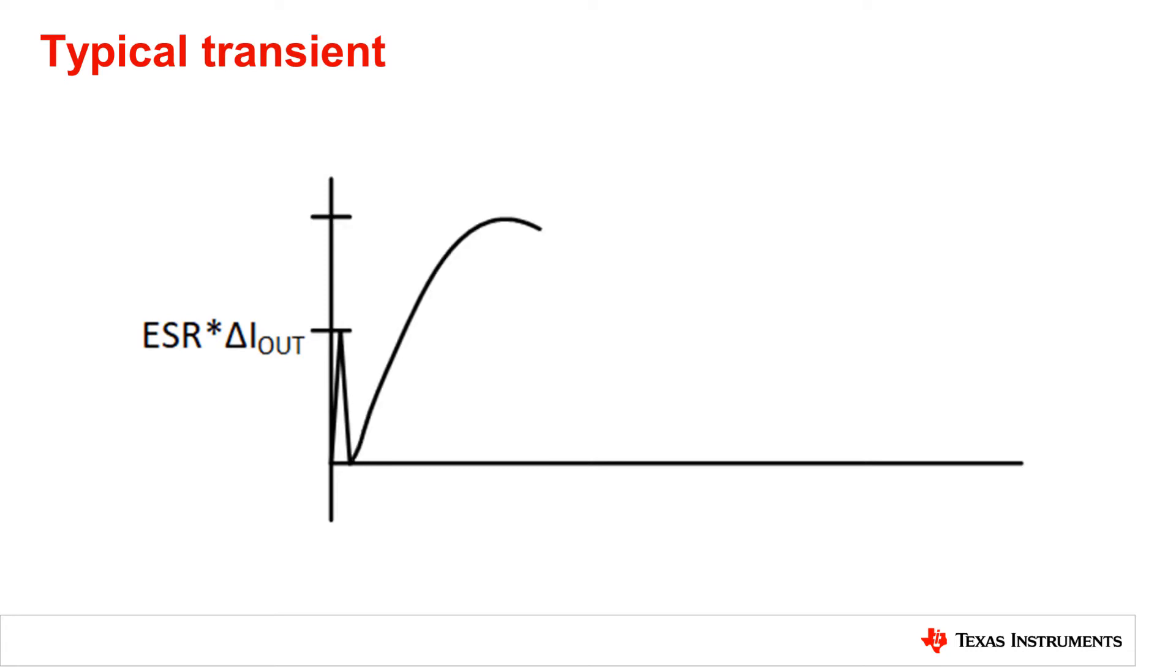After this spike, the frequency response of the converter will overshoot or undershoot depending on the direction of the load step and will slowly curve off to a maximum height. This height can be approximated by the equation on the top left.